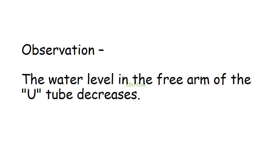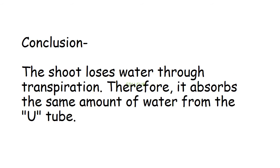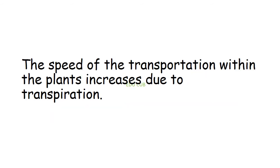You will observe that the water level in the free arm of the U-tube decreases. The shoot loses water through transpiration, therefore it absorbs the same amount of water from the U-tube. The speed of water transportation within the plant increases due to transpiration.